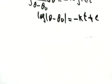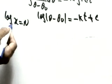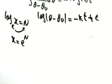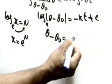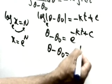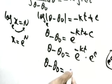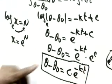Adding the constant of integration c, we have log|θ − θ₀| = −kt + c. Using the definition of log (if log x = n, then x = eⁿ), we take out the log: θ − θ₀ = e^(−kt + c). This can be written as θ − θ₀ = e^(−kt) · e^c. Letting e^c = C (capital C), we get θ − θ₀ = C·e^(−kt). This is the mathematical derivation of Newton's law of cooling.